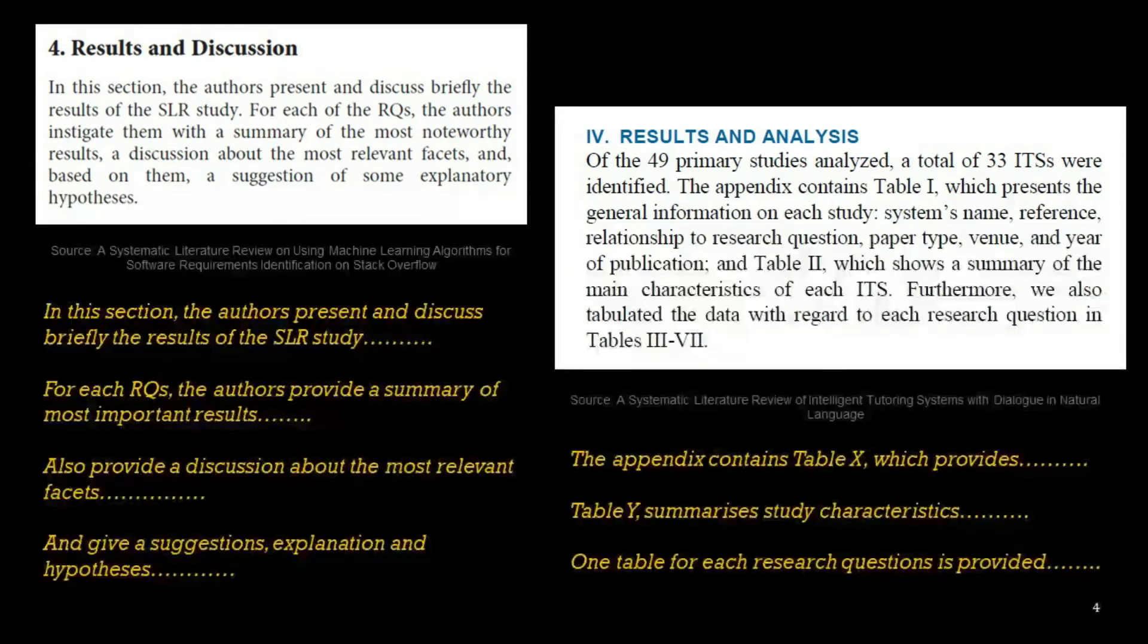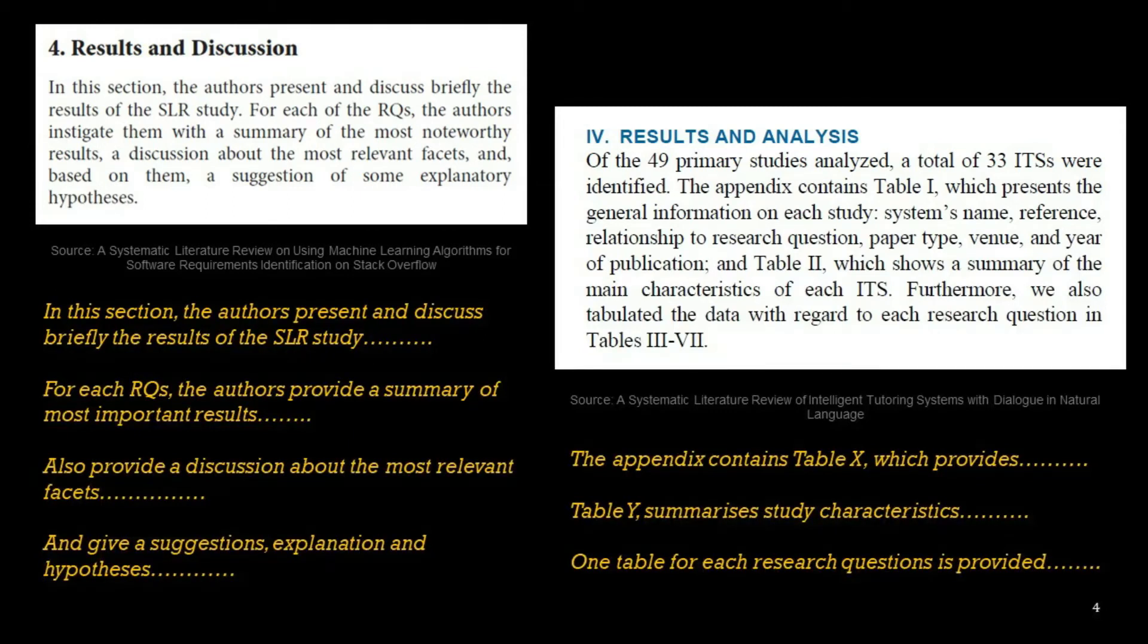Let's look at another example. Of the 49 primary studies analyzed, a total of 33 were identified. The appendix contains table 1 which presents the general information on each system. So this is like the study characteristics table that we discussed earlier. Paper type, venue, year of publication and table 2 shows a summary of the main characteristics. Further, we also tabulated the data with regards to each research question.